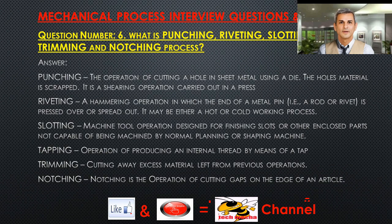Question number 6. What is punching, riveting, slotting, tapping, trimming, and notching process? Answer. Punching: the operation of cutting a hole in sheet metal using a die — the hole's material is scrapped. It is a shearing operation carried out in a press. Riveting: a hammering operation in which the end of a metal pin, i.e., a rod or rivet, is pressed over or spread out. It may be either a hot or cold working process.